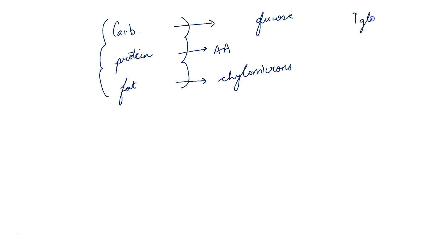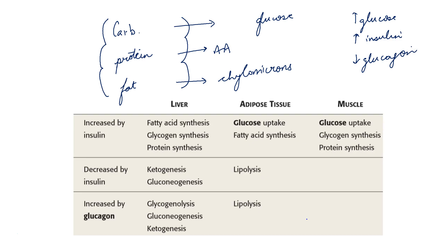During the well-fed state there is increased glucose in the blood, which activates the pancreatic beta cells to release insulin and a reduced amount of glucagon. Insulin causes fatty acid synthesis, glycogen synthesis, and protein synthesis in the liver, and also increases glucose uptake in the adipose tissue and the muscle. In the adipose tissue it is used for fatty acid synthesis, and in the muscle glycogen synthesis occurs and amino acids are used for protein synthesis.